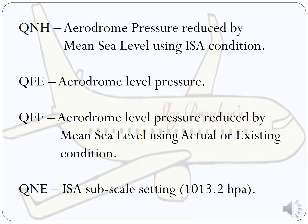Now we'll see some important Q codes, which we set on the altimeter while we fly. First is QNH — aerodrome pressure reduced to mean sea level using International Standard Atmospheric conditions. When we set QNH on the altimeter, we get altitude. Next is QFE — aerodrome level pressure. When we set QFE on the altimeter, we get height. Then there is QFF — aerodrome level pressure reduced to mean sea level using actual or existing conditions. QNH uses ISA conditions, while QFF uses the prevailing actual conditions.